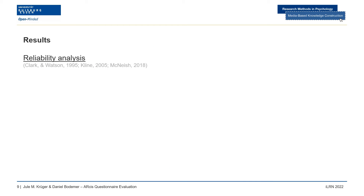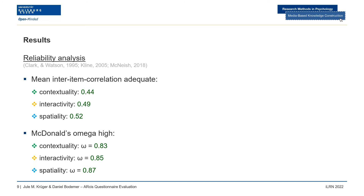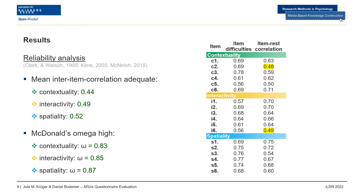We analyzed the reliability and factor structure of the questionnaire. Concerning the reliability of the scales, we found that mean inter-item correlation was adequate and McDonald's Omega indicates a high reliability above 0.8 for all subscales. Classical item difficulty shows that scores on average were above the center of the scale but not too high, indicating adequate item difficulty. Item-scale correlation was 0.5 or higher, except for two items, but in general indicating adequate item-scale correlation.